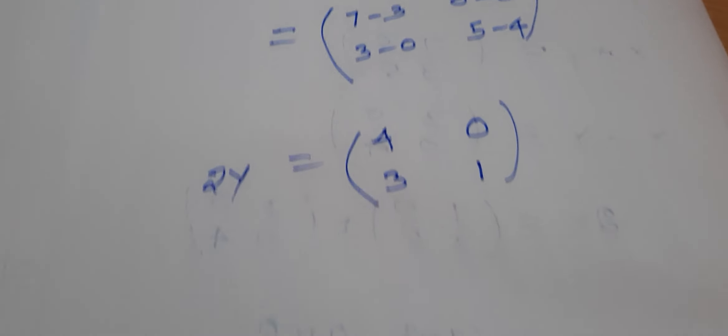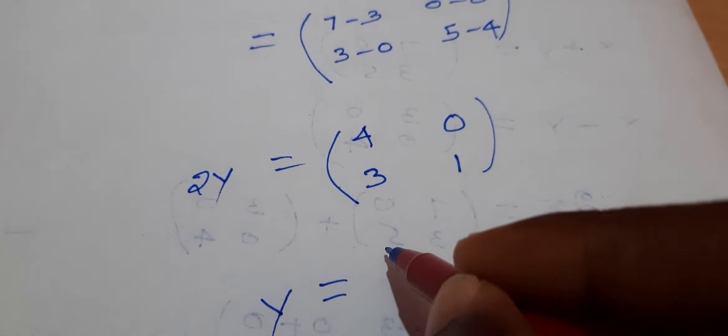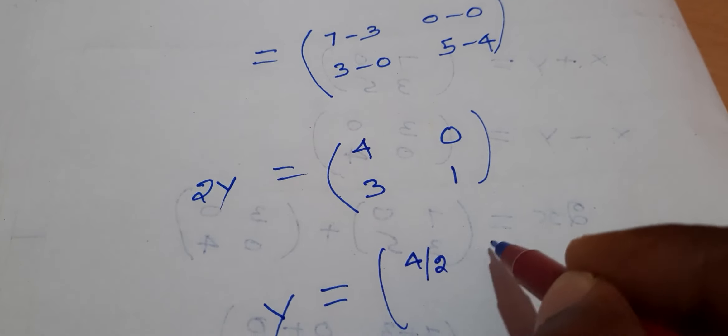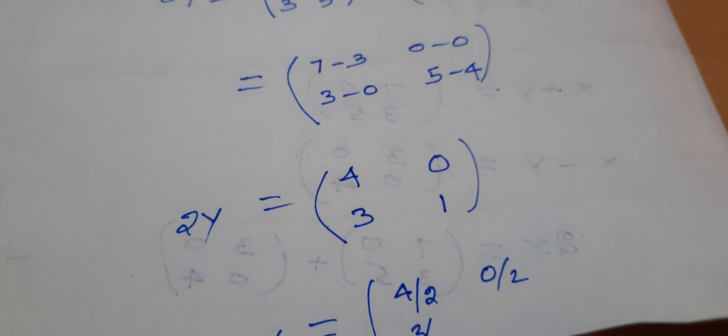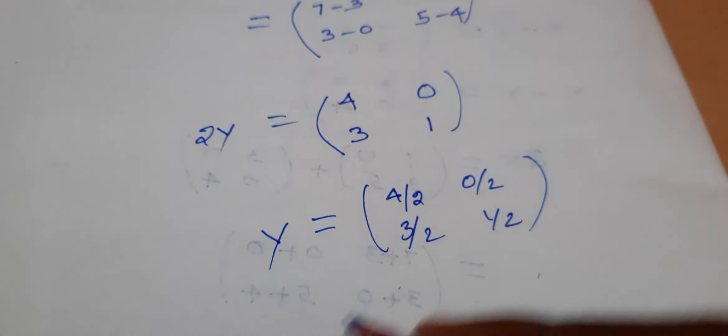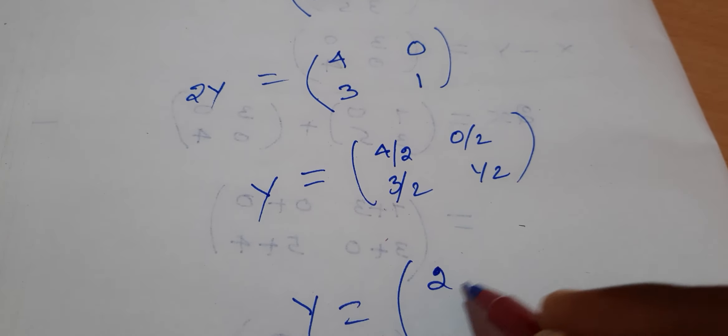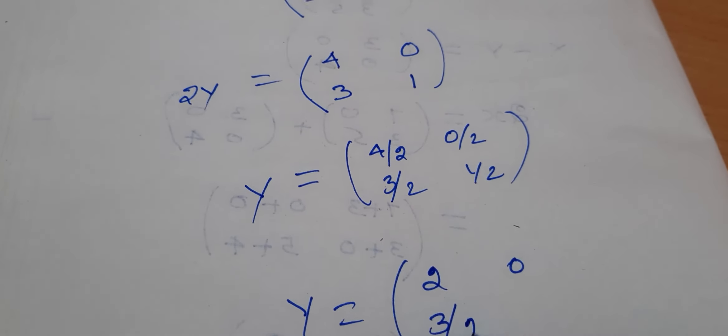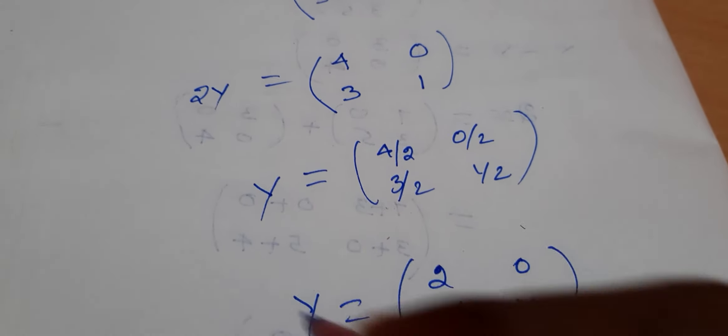2y equals (4, 0; 3, 1). Divide by 2. 4 by 2, 0 by 2, 3 by 2, 1 by 2. So y equals (2, 0; 3/2, 1/2). This is the value of y.